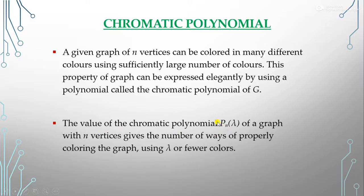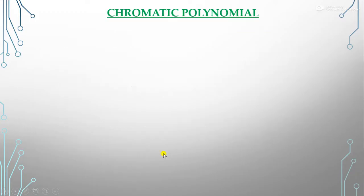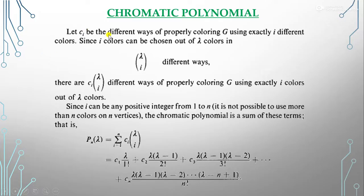We represent the chromatic polynomial by P(λ), where n represents the number of vertices of a graph, and λ represents the number of colors. It gives the number of ways of properly coloring the graph using λ or fewer colors. Let c_i be the number of different ways of properly coloring G using exactly i different colors. Since i colors can be chosen out of λ colors, to find the chromatic number we choose the minimum number of colors.